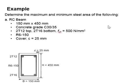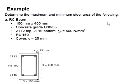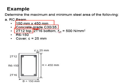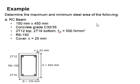Let us try some examples to determine the maximum and minimum steel area of a reinforced concrete element. This is a reinforced concrete beam. The dimension is 150 × 450. The concrete grade is 30. The top reinforcement bar is 2T12 and the bottom reinforcement bar is 2T16. The shear link is R6-150 and the concrete cover is 25.